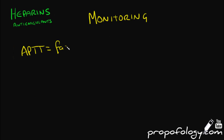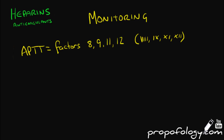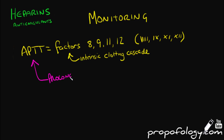APTT, or activated partial thromboplastin time, is the best way of monitoring unfractionated heparin. APTT reflects the action of intrinsic factors 8, 9, 11, and 12, but is still prolonged by heparin as it inhibits the activation of prothrombin. It is not prolonged by low molecular weight heparins, as they act earlier in the pathway on factor 10a.